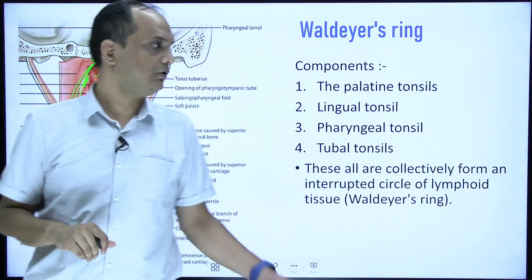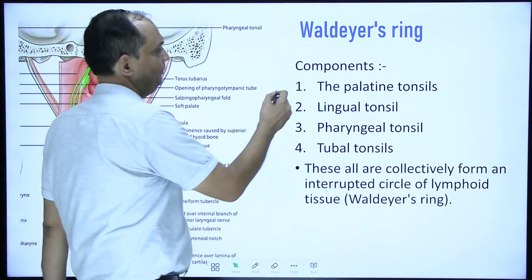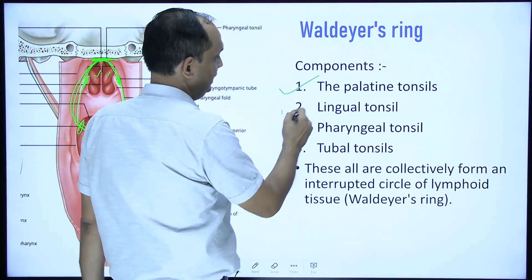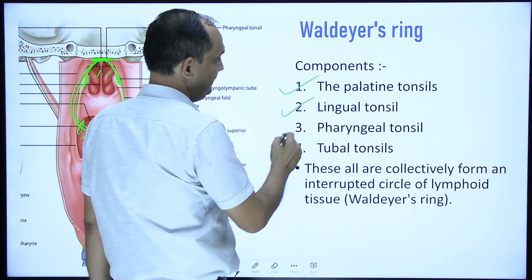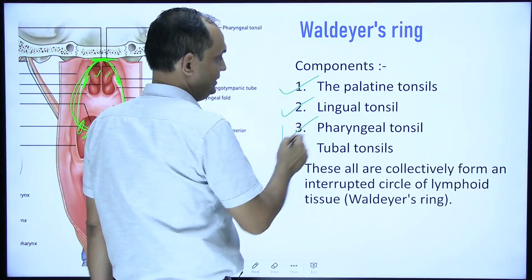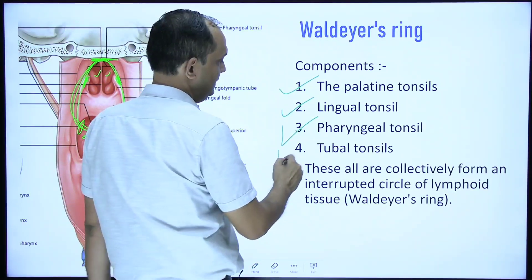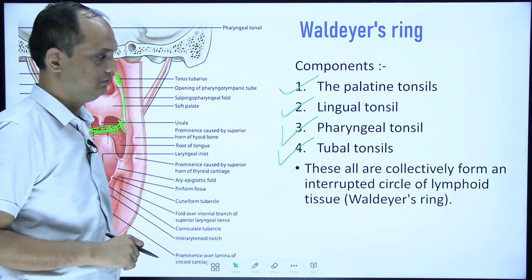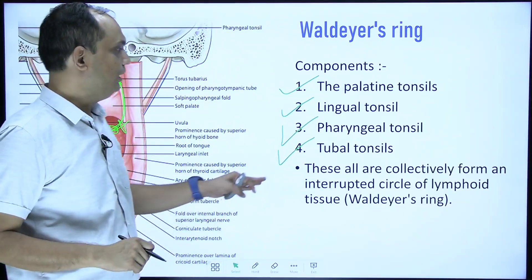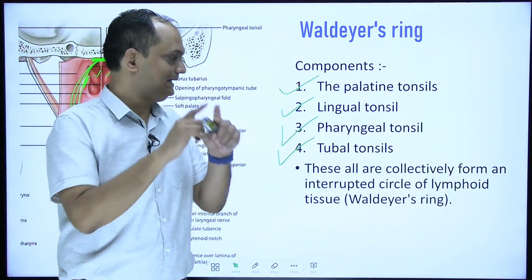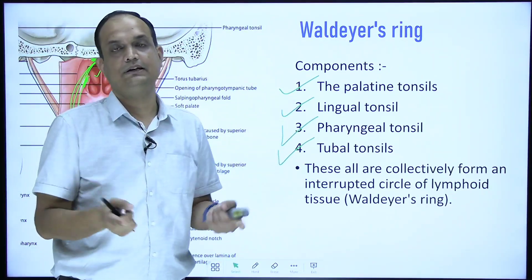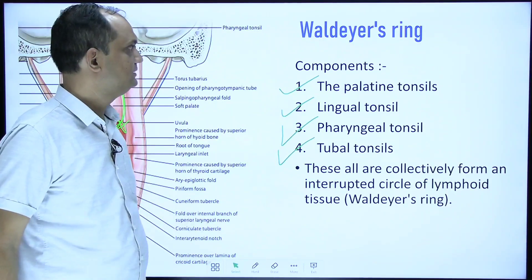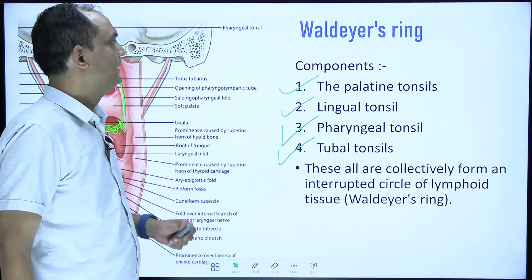The components of Waldeyer's ring are: a pair of palatine tonsils, lingual tonsil, pharyngeal tonsil, and a pair of tubal tonsils. All of them collectively form a circle known as Waldeyer's ring.